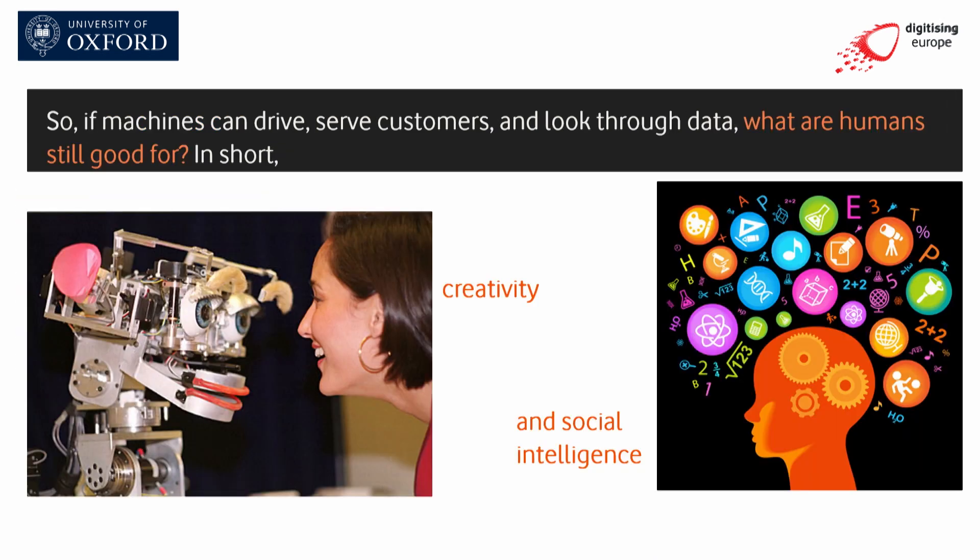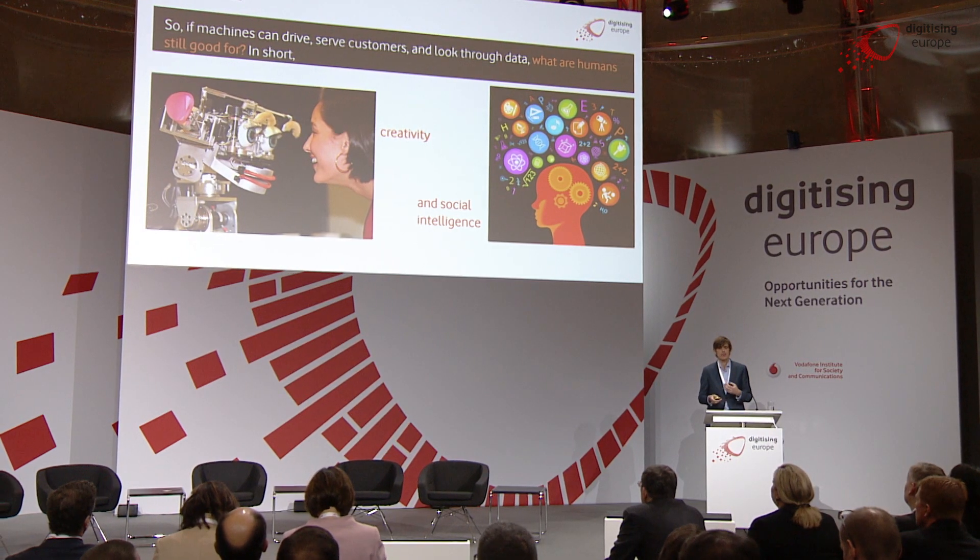The next question is: if machines can drive, serve customers, and dig through data, what are we still actually good for? Another component of our study was to identify the bottlenecks to automation — the kinds of things we don't foresee being automated over the next couple of decades. The first two bottlenecks were creativity and social intelligence, both of which draw upon very deep, intuitive, tacit knowledge that we have as human beings. That deep reservoir of knowledge is very difficult to encode into an algorithm — it's difficult to teach an algorithm the difference between a good painting and a bad painting, in a way that human beings are quite well-equipped to do.